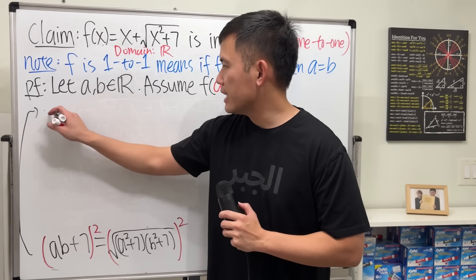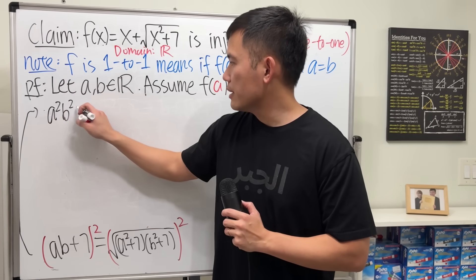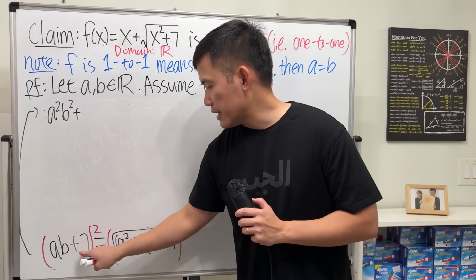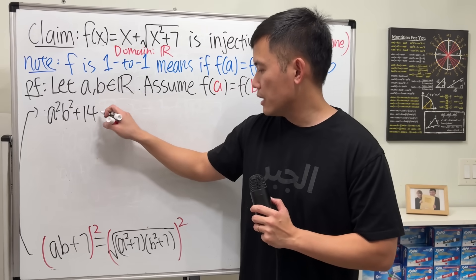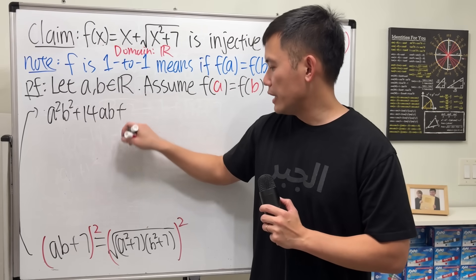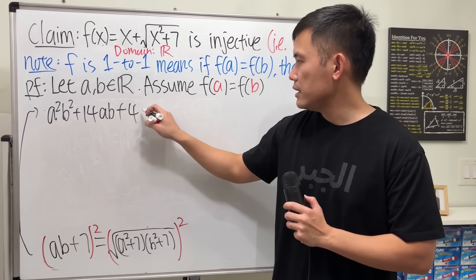When we expand this, we square the first term. We get a squared b squared, and then we add 2 times this and that. That will be 14ab, and then we add 7 squared, which is 49.